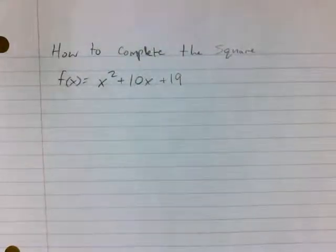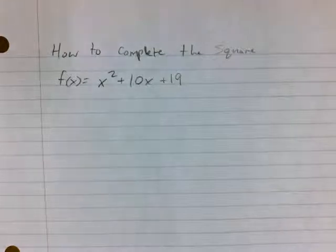This is a little quick review on how to complete the square. If you're given an equation like f of x equals x squared plus 10x plus 19, you're going to start by taking the first part of your equation.